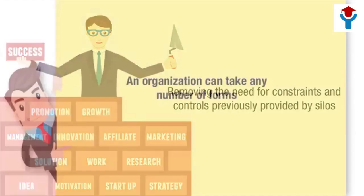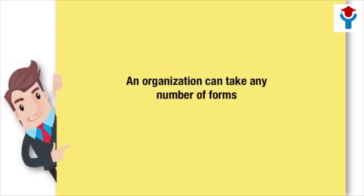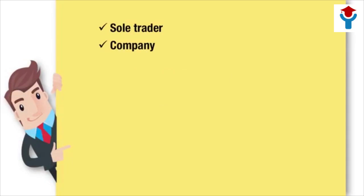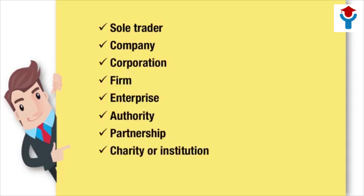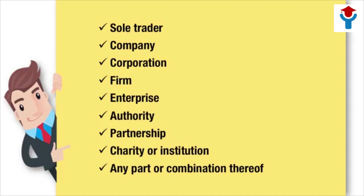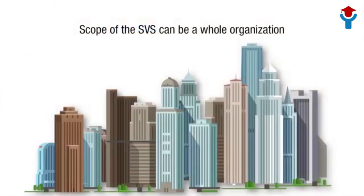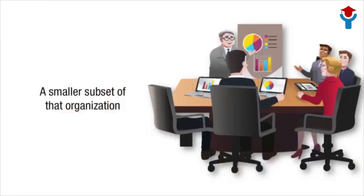An organization can take any number of forms, including but not limited to: sole trader, company, corporation, firm, enterprise, authority, partnership, charity, or institution, or any part or combination thereof, whether incorporated or not, and be either public or private. This means that the scope of the SVS can be a whole organization or a smaller subset of that organization.